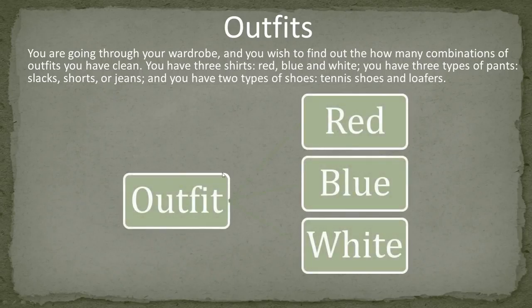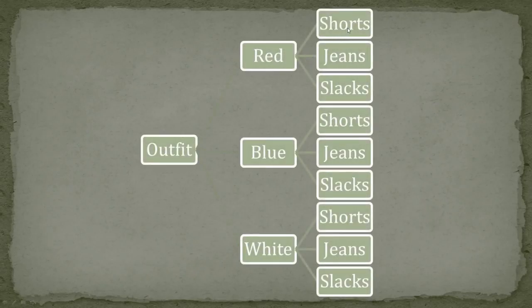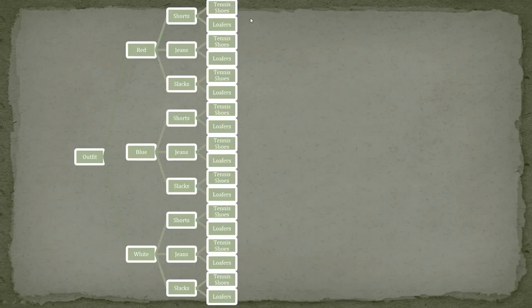We start with our outfit. We have the three shirts: red, blue, and white. Each of these is going to have the three types of pants — shorts, jeans, or slacks — for each shirt color. Now each of those combinations is going to have the two types of shoes: tennis shoes or loafers. It's a little bunched in here, but each of these options are listed.